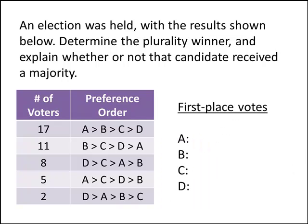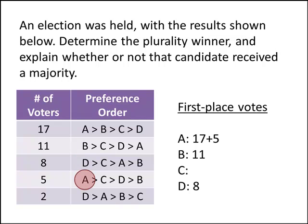We'll add up the first place votes that each candidate got going down each row of the table. In the first row, those voters liked A the best, so that's 17 first place votes for A. In the next row, those voters liked B the best, so that's 11 first place votes for B. Then 8 first place votes for D, 5 more first place votes for A — giving A a total of 22 first place votes — and then 2 more for D, giving D a total of 10 first place votes. Notice that none of the voters ranked C in first place, so C has 0 first place votes.